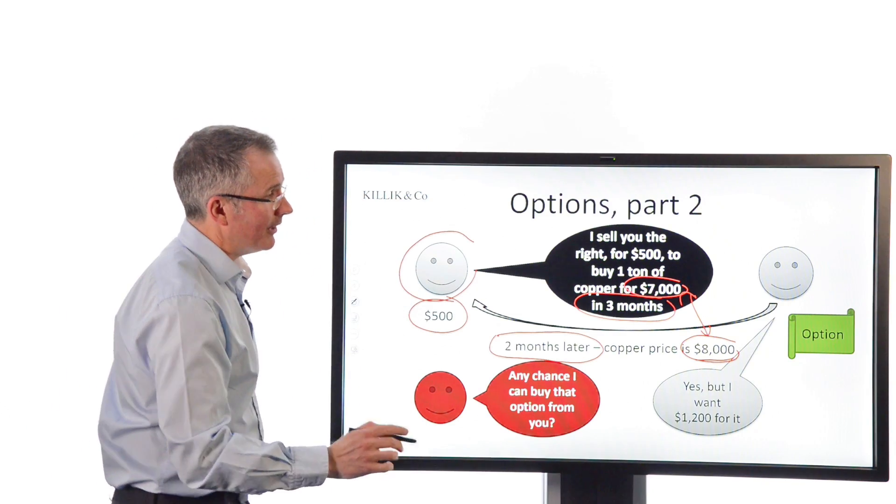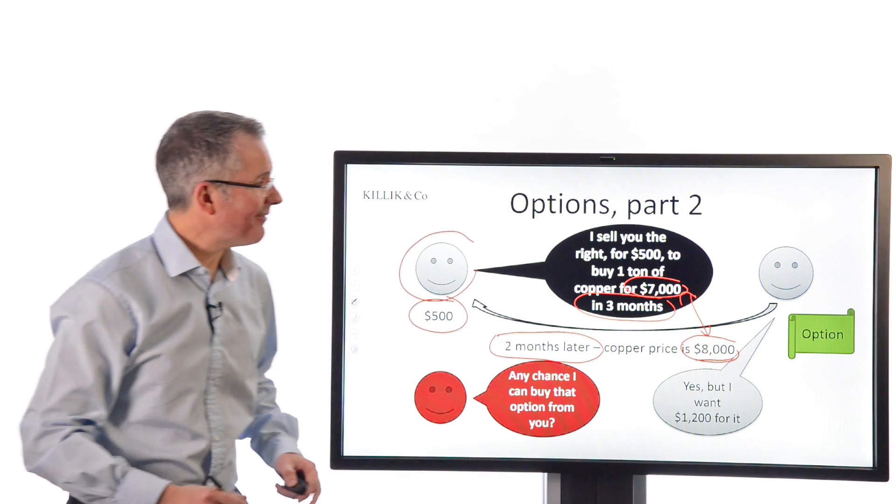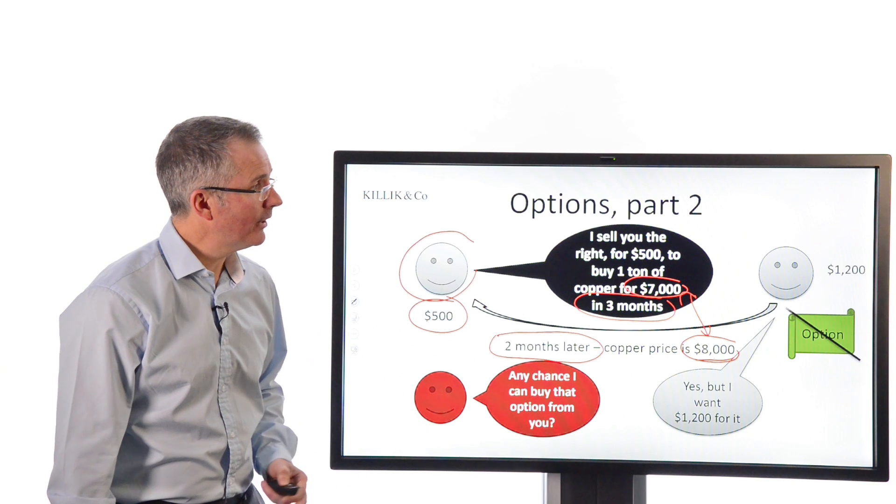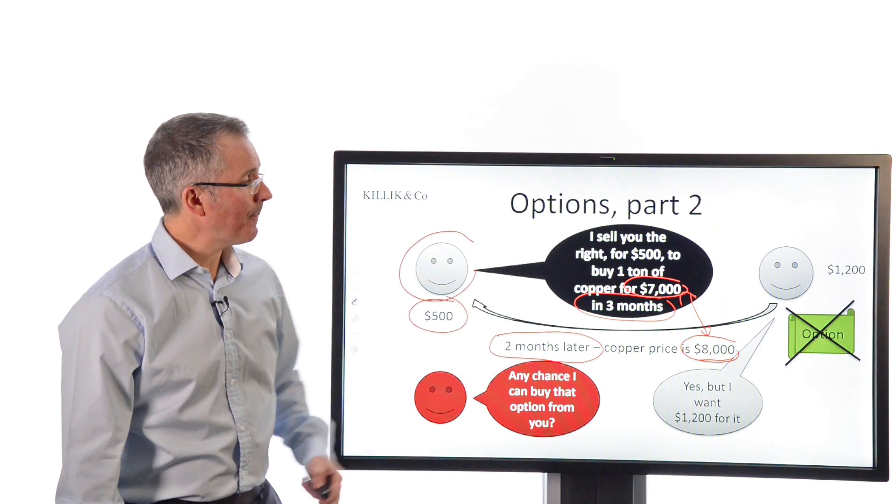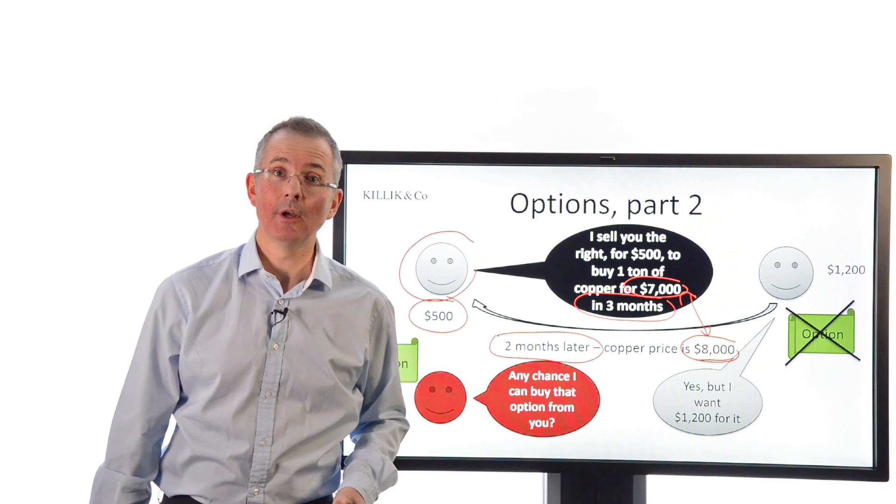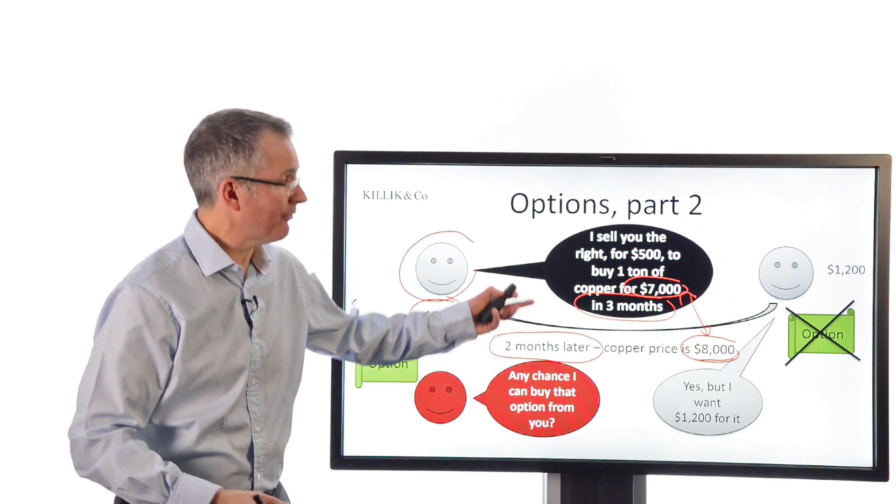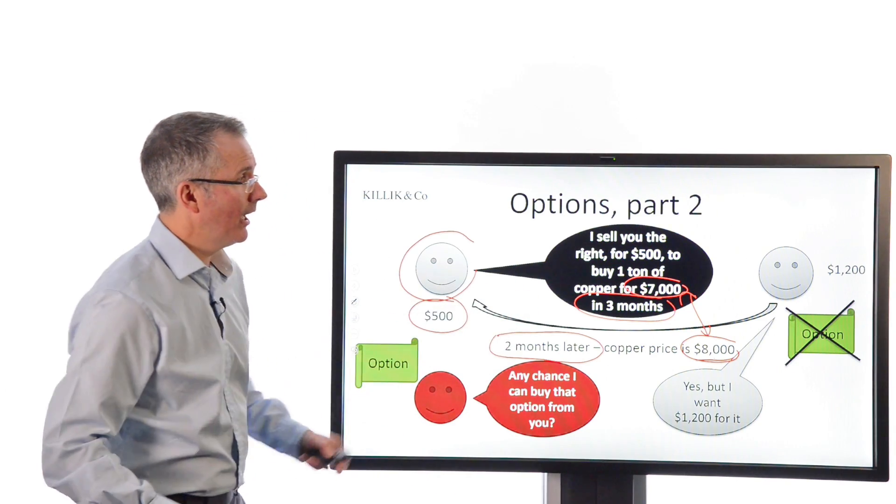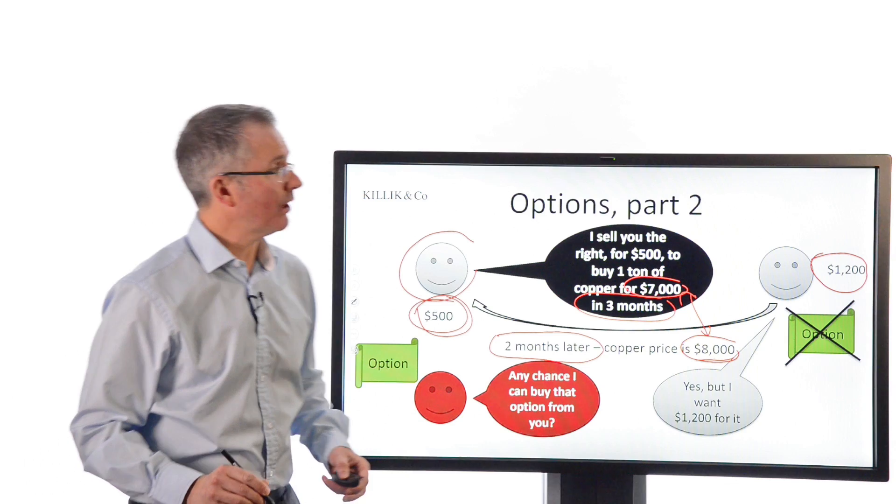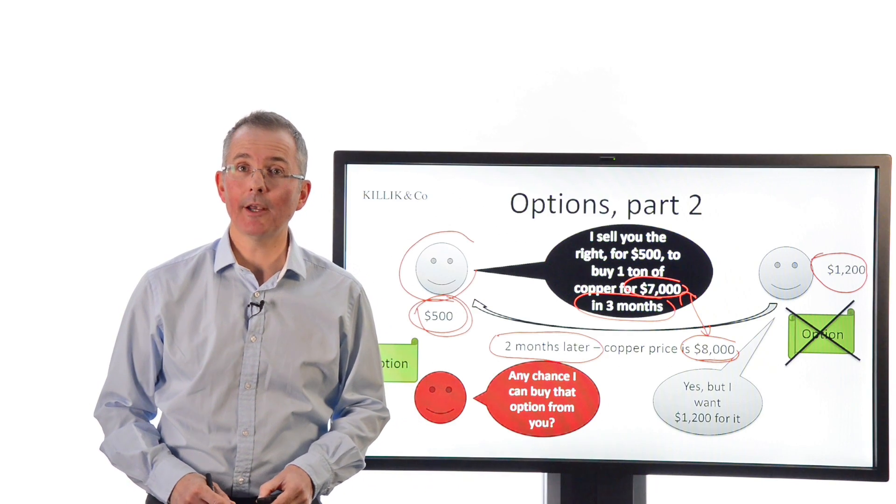And assuming the red-faced guy on the left agrees, $1,200 goes over there and the option is cancelled and resides back with the person who originally wrote it. Net effect, this guy is now free to sell a ton of copper to anybody at the market price whenever he likes because the option's now gone. On the right-hand side, this guy has made a profit of the difference between that and that. That's a $700 profit for doing very little. No copper's changed hands, just taking a bit of a punt, you might say, on the copper price.